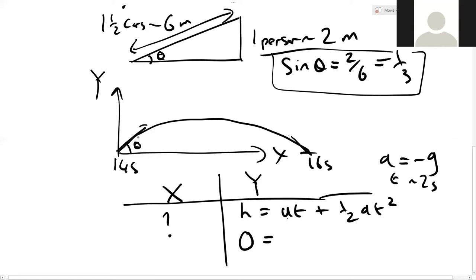The u here is actually going to be the component of u in the vertical direction. So remember we said that would be, that's what we called u2. So this is going to be u2 sine theta. So here we'd have u2 sine theta times by t minus 5t squared.